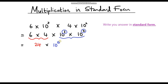If you're a bit iffy with your laws of indices, I do have a video dedicated to that, so please feel free to have a look. So we've got 24 times 10 to the power 5. Is this our final answer? No, because we need to write our answer in standard form, and at the moment this is not in standard form.